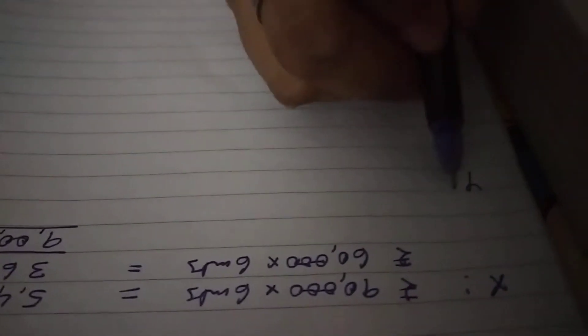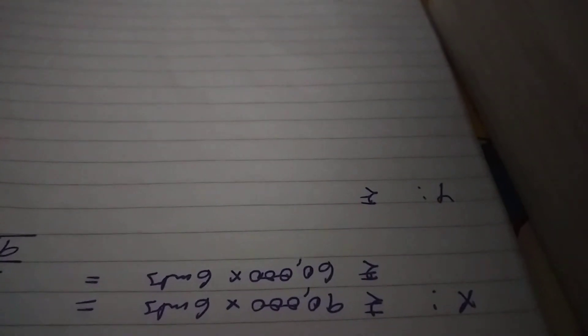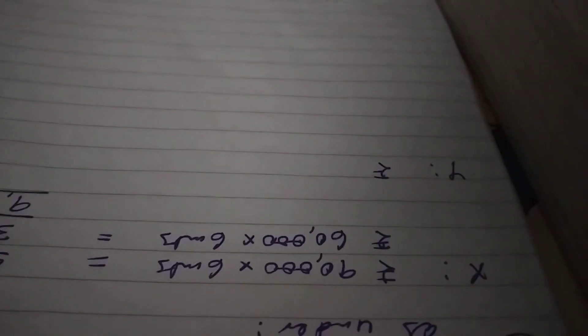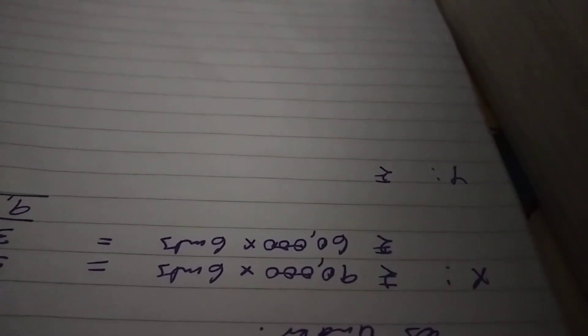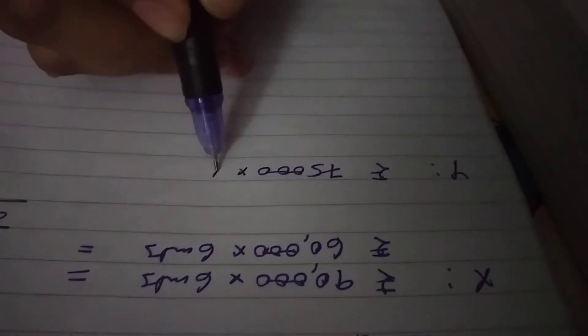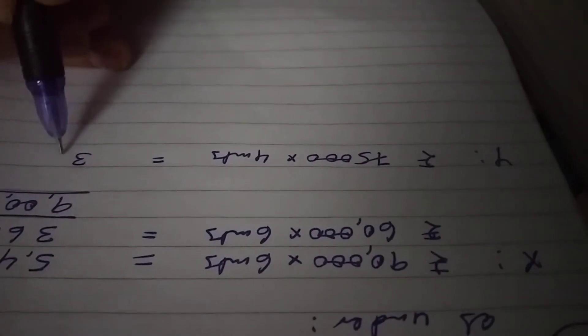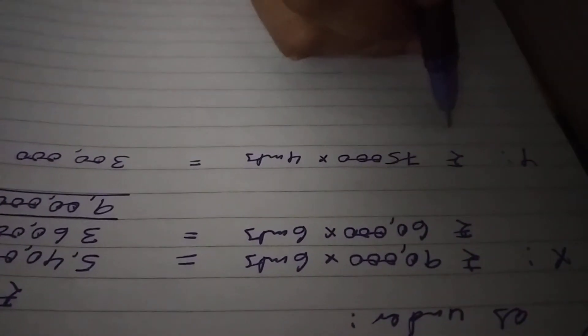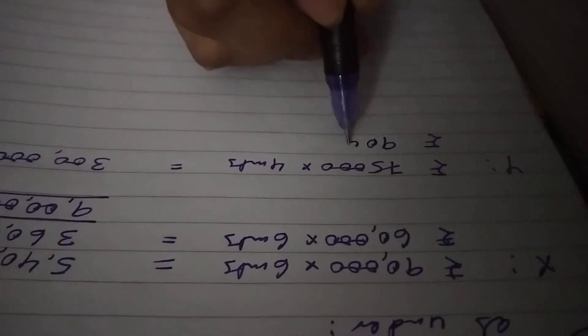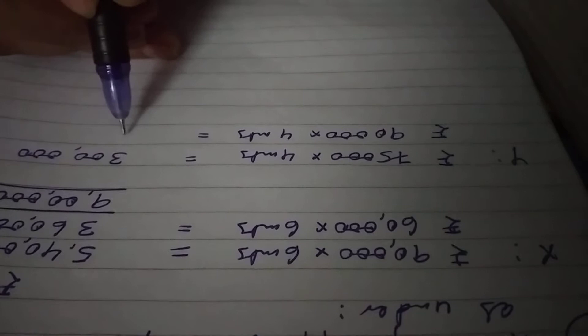Then Y. Y introduces rupees 75,000 at first and increases it to 90,000 at the end of 4 months, that means 75,000 for 4 months. Rupees 75,000 into 4 months equals 3 lakh. Then 90,000 for 4 months, 90,000 into 4 months equals 3,60,000.